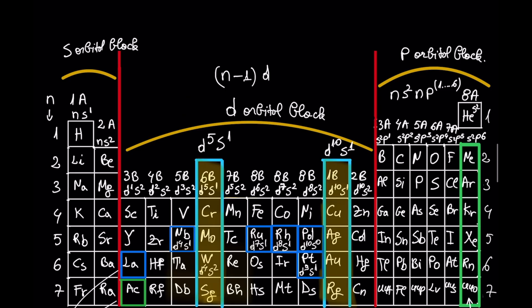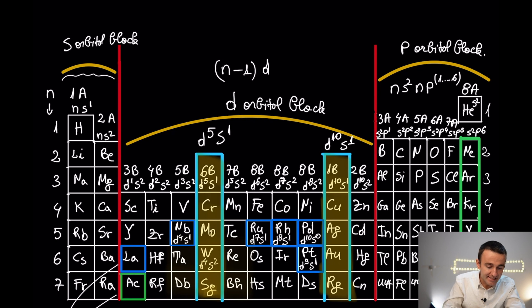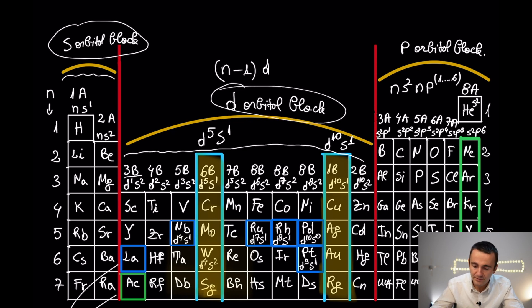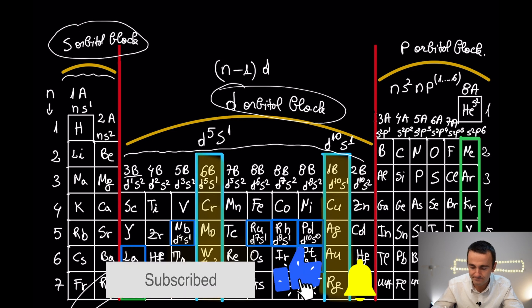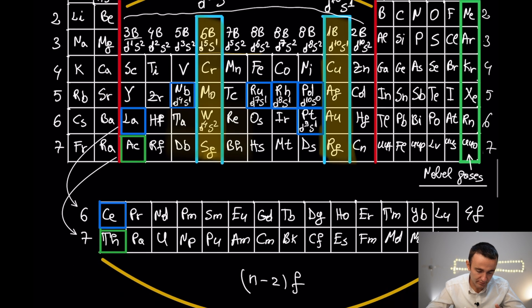Let's move now to the periodic table, which is called the chemist's best friend. It's a really helpful tool. The periodic table tells us a lot of important information about electronic configurations. Group 1 and group 2 are the s orbital block. The transition metals are the d block. And the nonmetals on this side are the p orbital block.